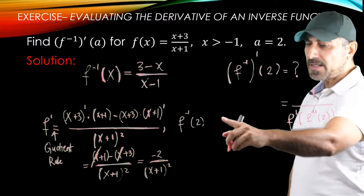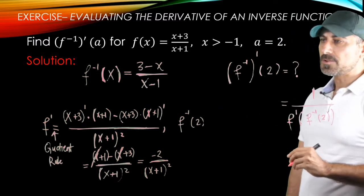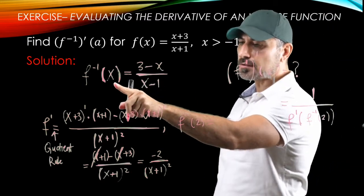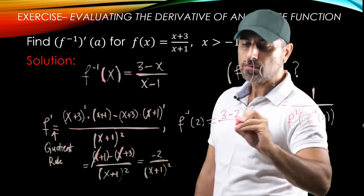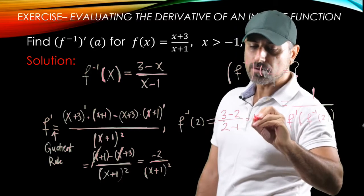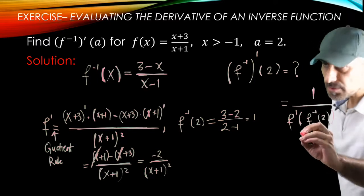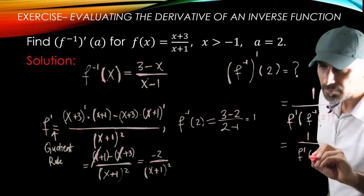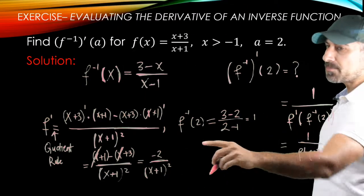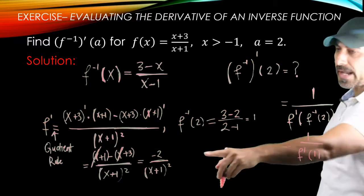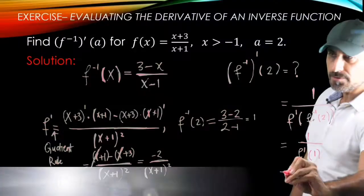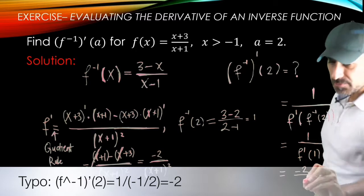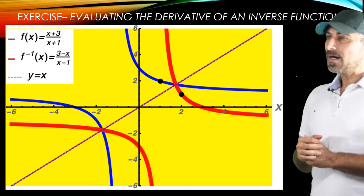Now let's find f inverse evaluated at 2. Plugging 2 into the inverse function gives (3−2)/(2−1) = 1/1 = 1. So the expression becomes 1 over f prime evaluated at 1. Plugging x = 1 into f prime gives −2 divided by (1+1) squared, which is −2 over 4.